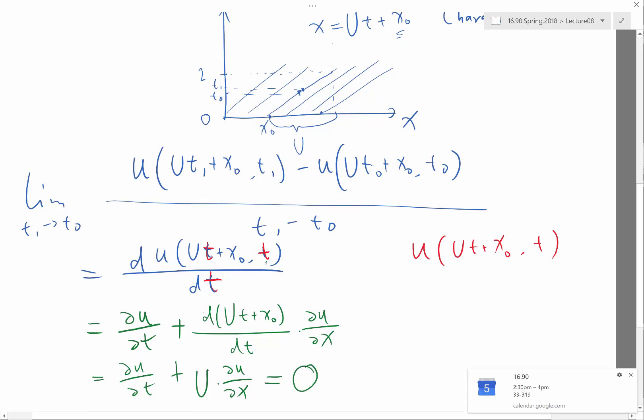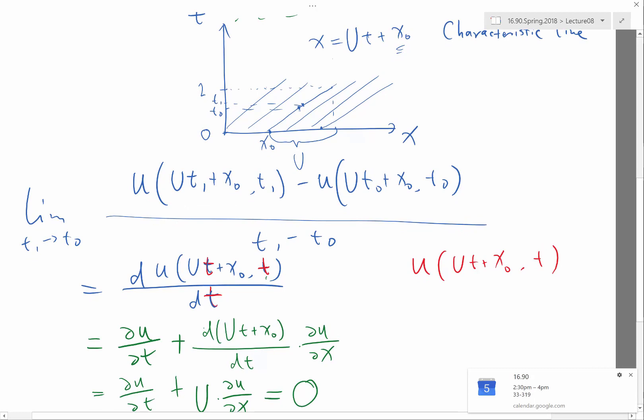Okay. So here we have correctly figured out by doing mathematics, not just from observation, that if you travel along a slope, which corresponds to the one of these characteristic lines, right? Then my solution should have a derivative of zero, which means the solution doesn't change along each individual characteristic line.